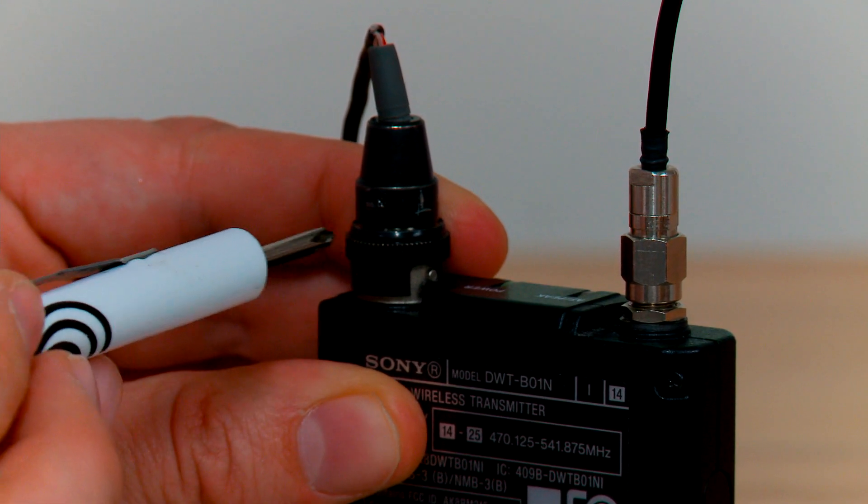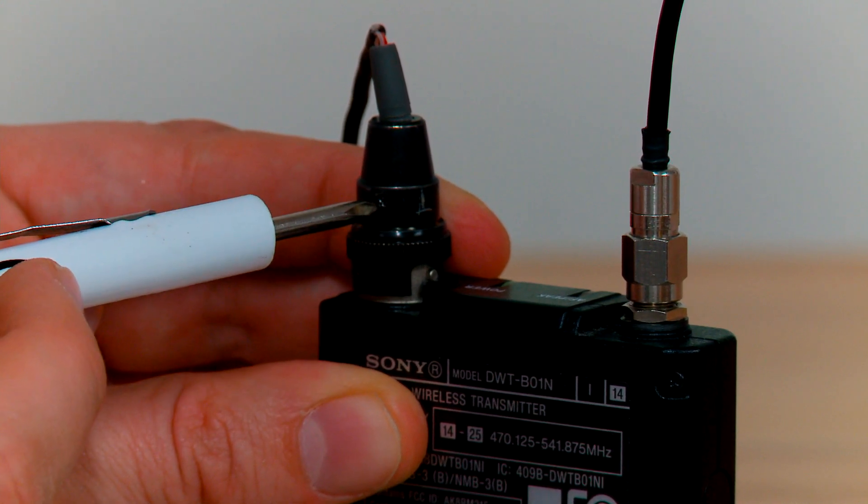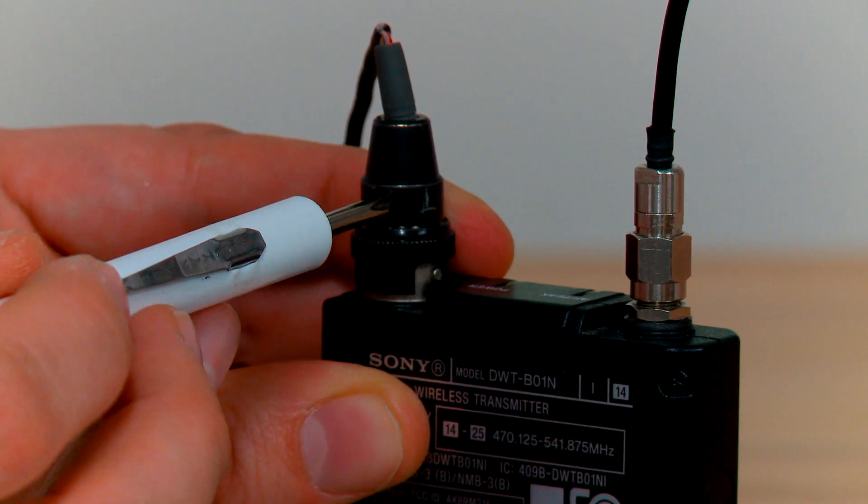To disassemble the connector, first you need to remove this tiny screw with a small phillips screwdriver.